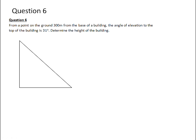And finally, question 6. From a point on the ground 300 meters from the base of a building, the angle of elevation to the top of the building is 31 degrees. Determine the height of the building. So remember that the building and the ground make a 90 degree angle with each other. We know that this point on the ground is 300 meters away from the base of the building. And the angle of elevation, so in other words, the angle between the ground and the line of sight, will be 31 degrees.